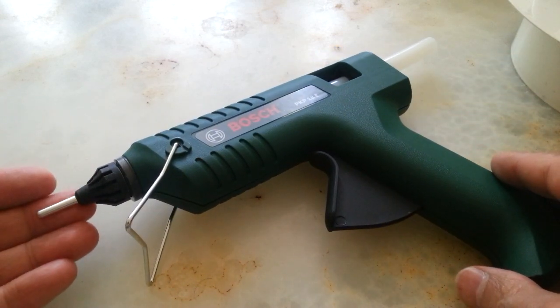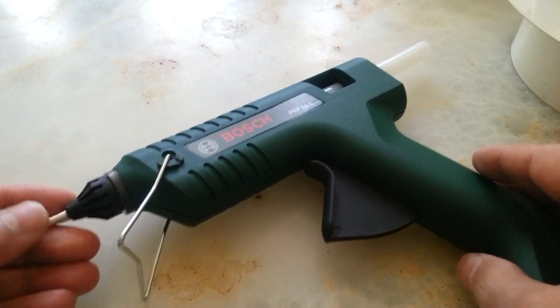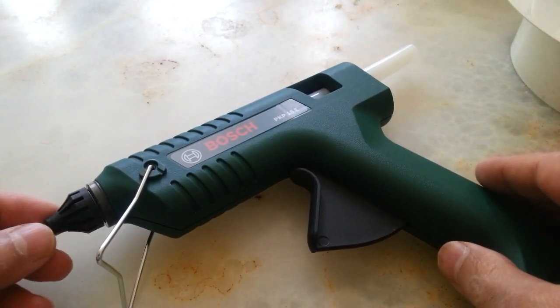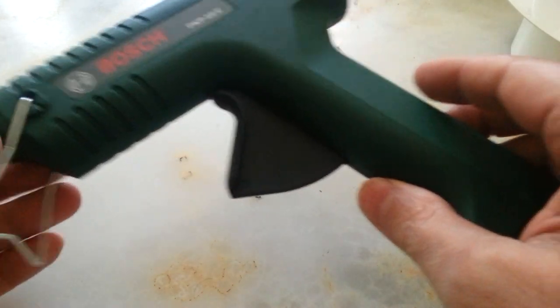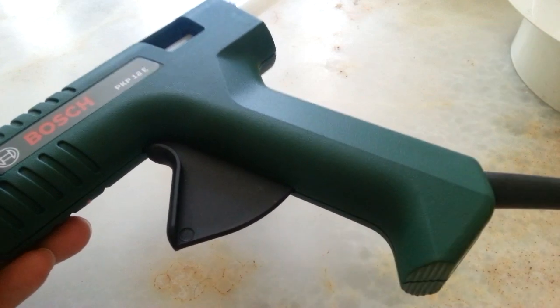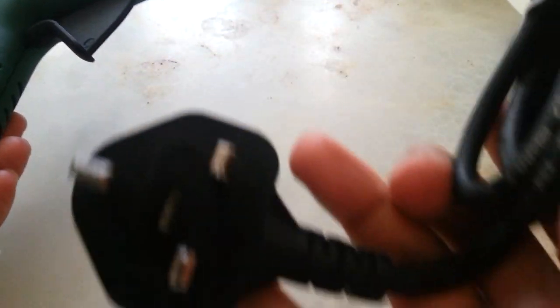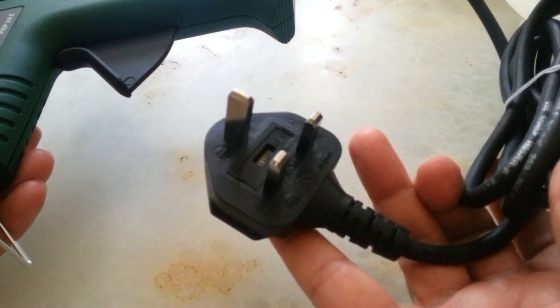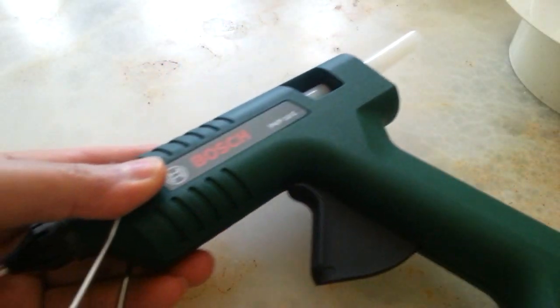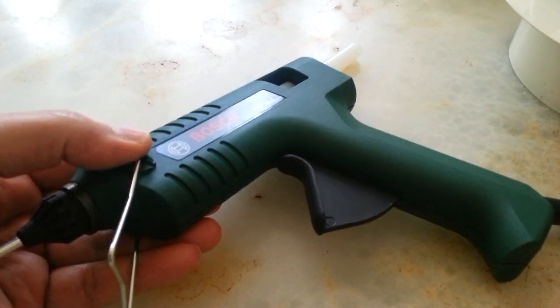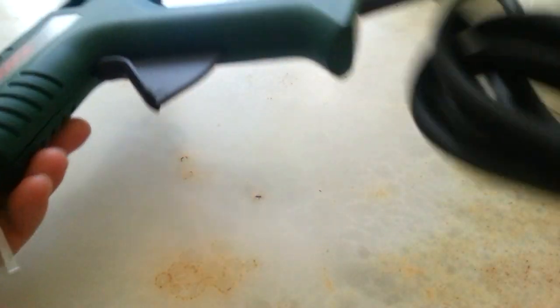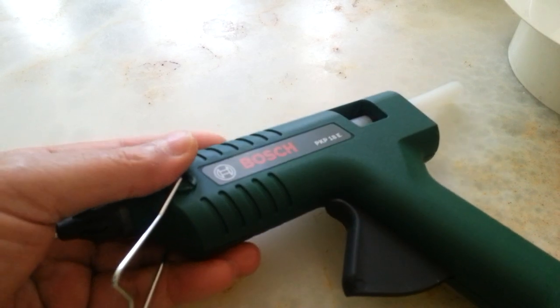This glue gun doesn't have any switches to turn it on and off. You just put it in the socket outlet and it's on. When you want to turn it off, you have to get the plug out of the socket. It stays hot for another ten minutes after.